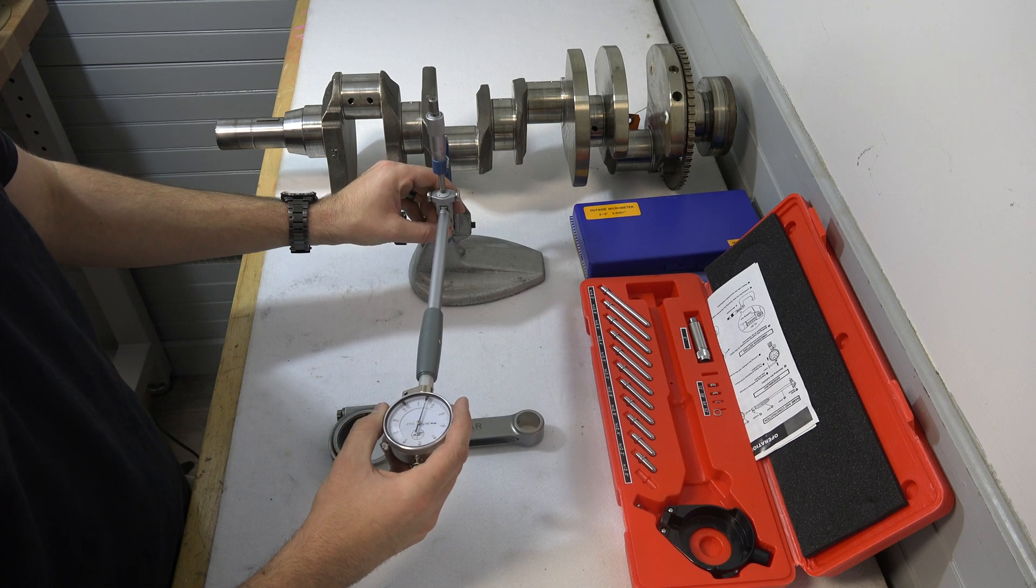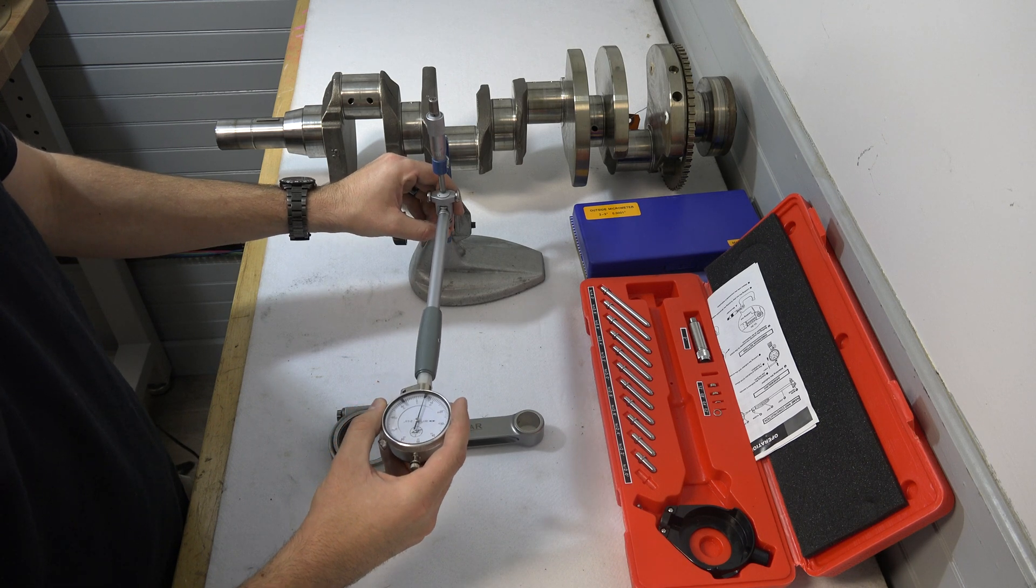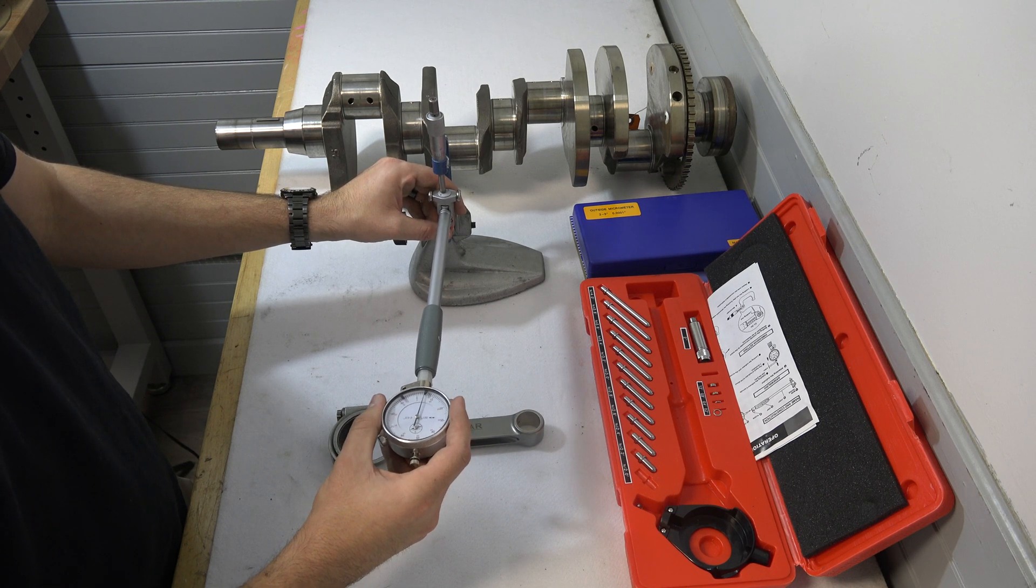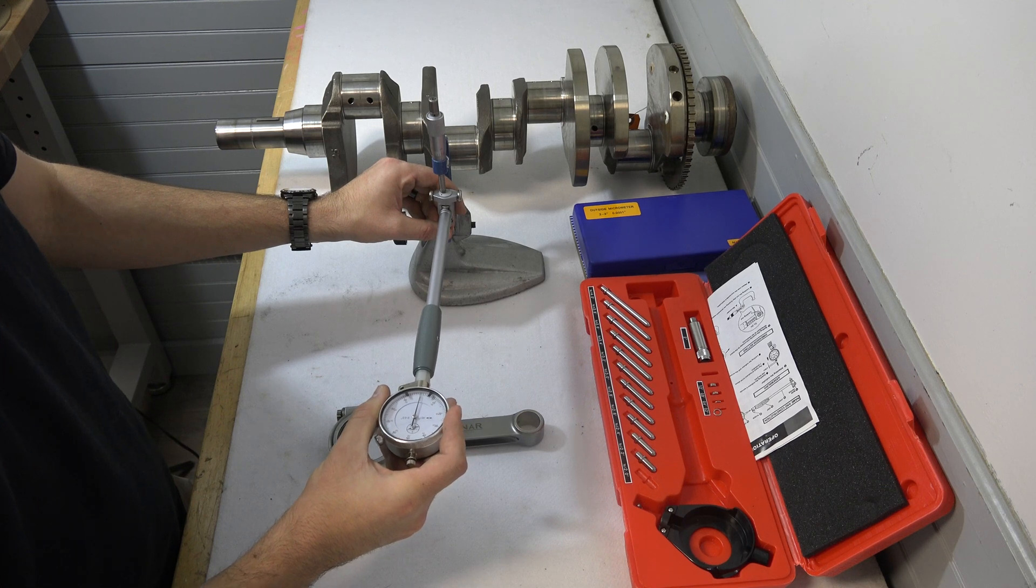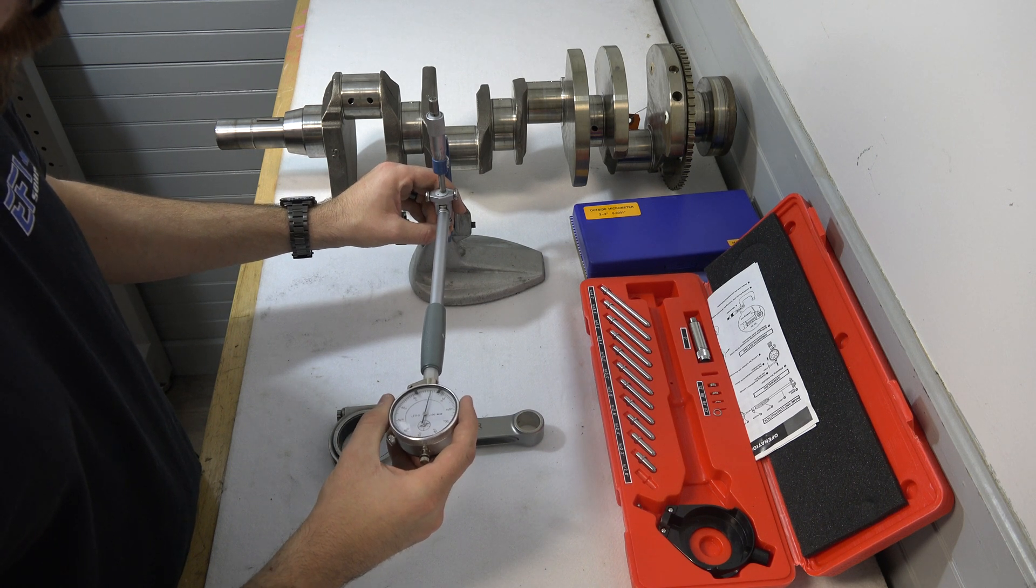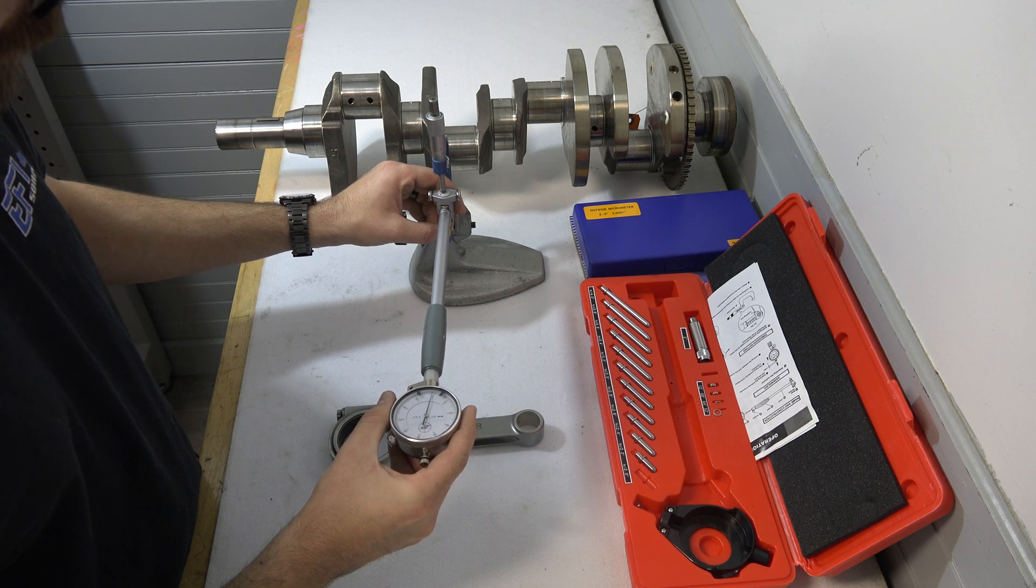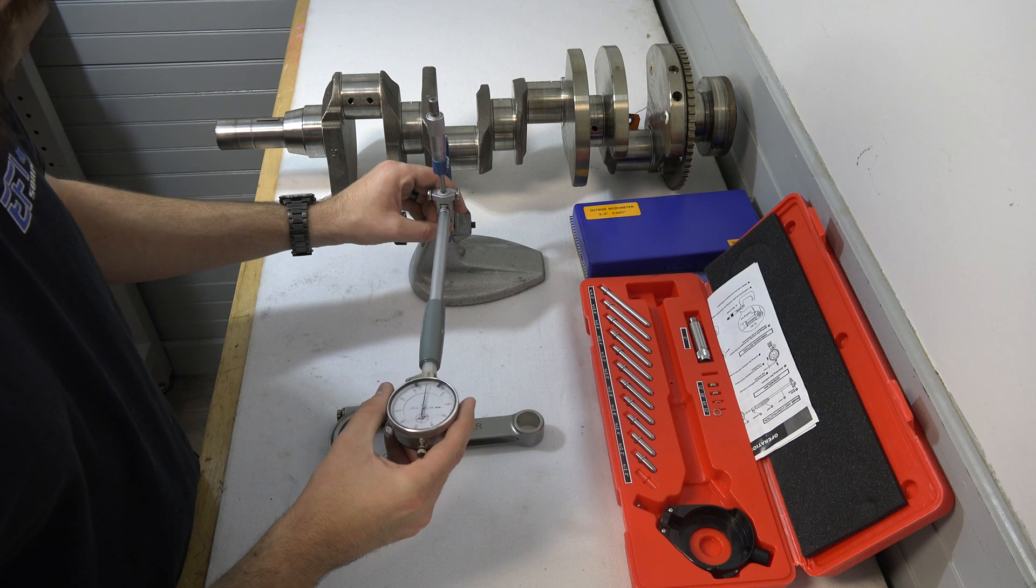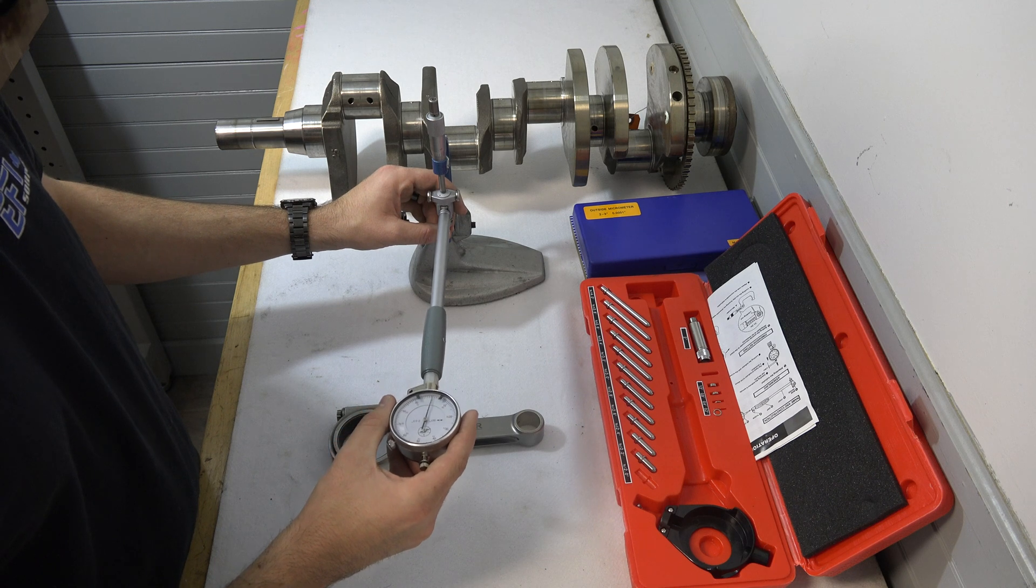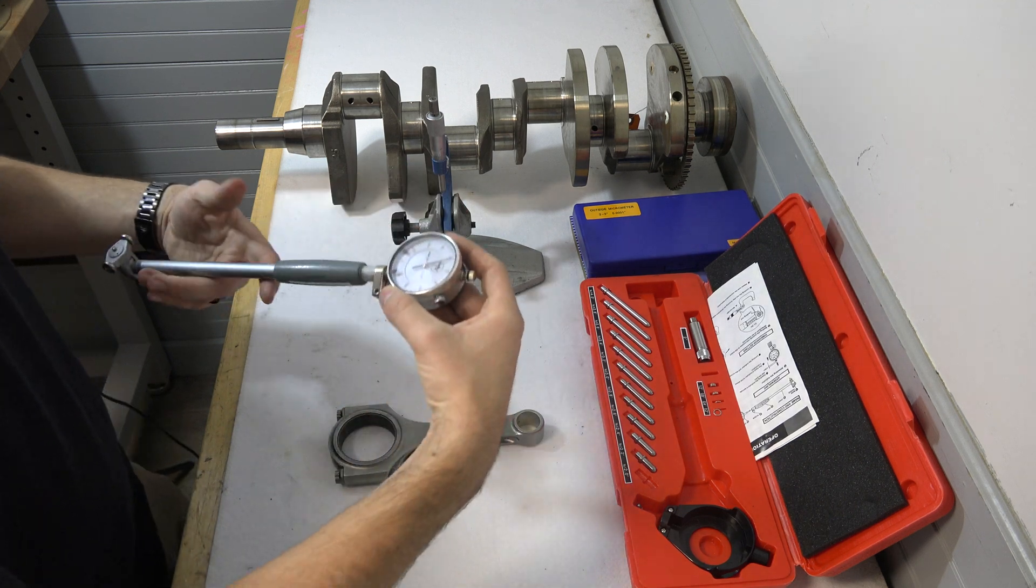And what we're going to do is work the dial bore gauge left and right and up and down and then we're going to zero out our gauge here. So we'll get left and right to about a thousandth off. This is the trickiest part so it's going to take some time to get this right because this is critical right here. All right, that looks good.